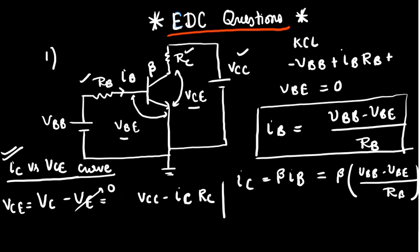So this is how I approach this problem. I write VCE, what is VCE? VCE is VC minus VE, correct? VC minus VE.